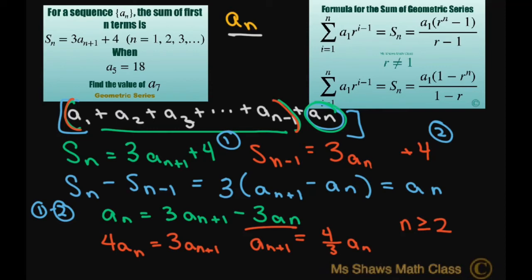That means our sequence is geometric with our first term is going to be a sub 2, and our common ratio is 4 thirds.